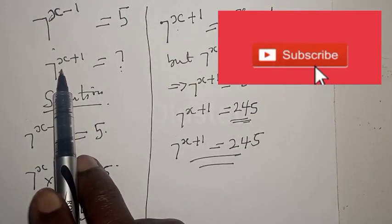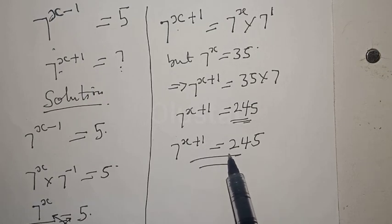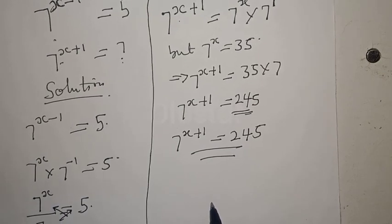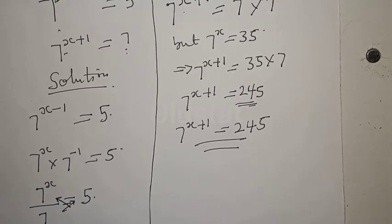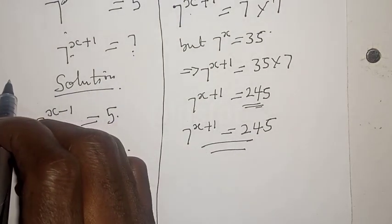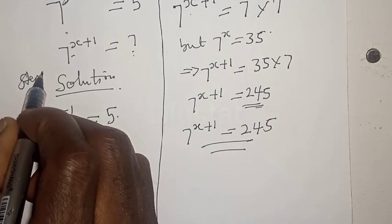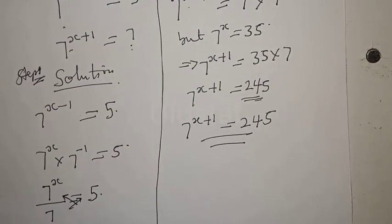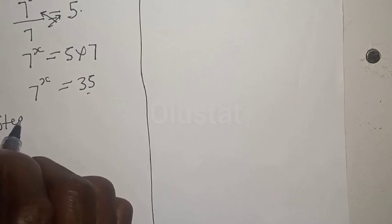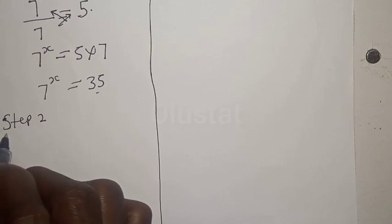So that is the answer. From the question we did not know 7 raised to power x plus 1, and here 7 raised to power x plus 1 is equal to 245. Let's use the other method to solve it and see if we are going to get the same answer. Let's call the first approach step one, and now let's use step two.